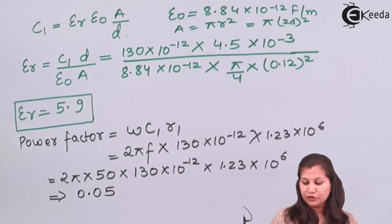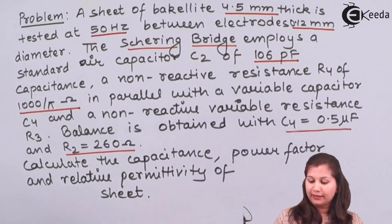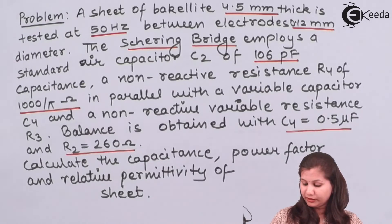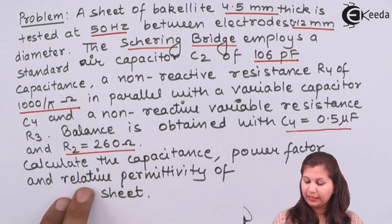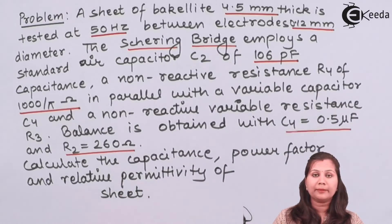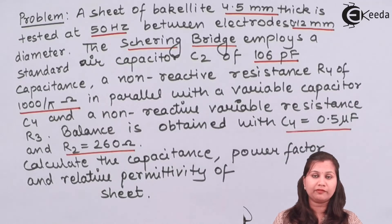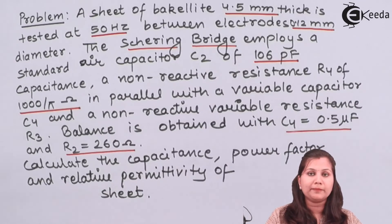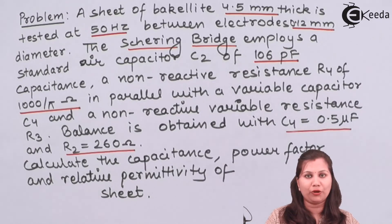In this question, a Schering bridge was used to test the properties of a sheet of Bakelite. We calculated the capacitance C1 = 130 pF, power factor = 0.05, and relative permittivity εr = 5.9, using the balance equation Z1·Z4 = Z2·Z3. All problems based on the measurement of capacitance using the Schering bridge can be solved in this way.